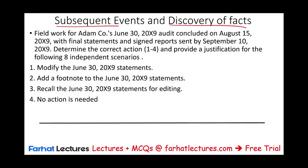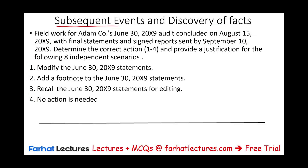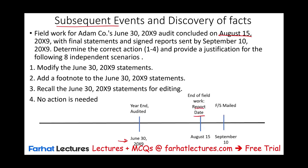The fieldwork for Adam Company's June 30th audit concluded on August 15th, 20X9, with the financial statements signed and the report sent by September 10th. The year-end financial statements are dated June 30th, 20X9. The period between June 30th and August 15th is called the subsequent events period. The period after September 10th is called subsequent discovery of facts. From August 15th to September 10th, we are basically processing the financial statements.